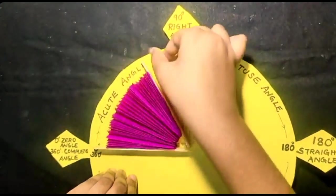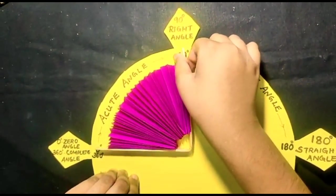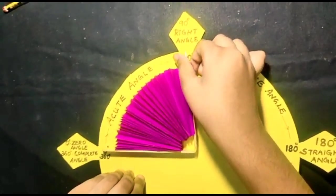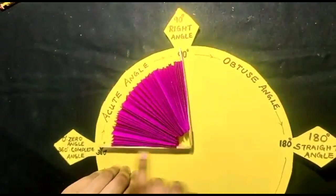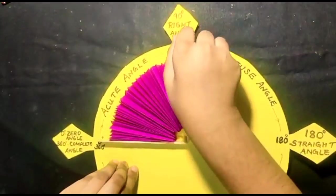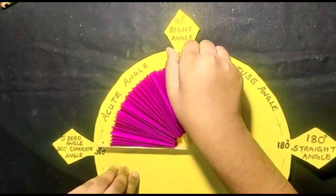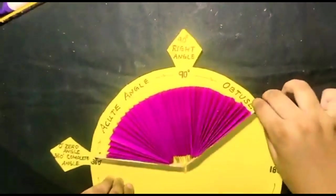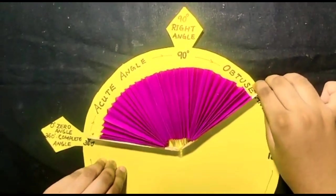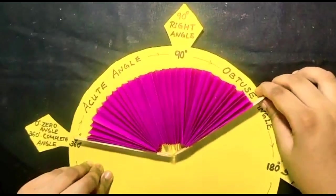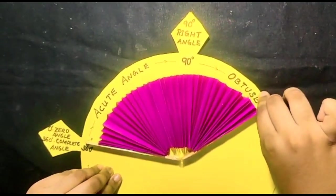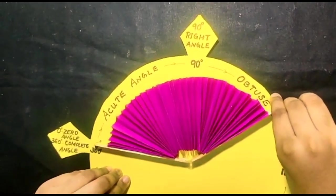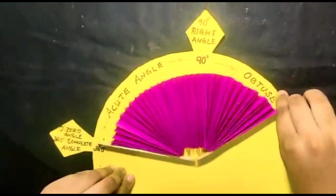When it is at 90 degree, it is right angle. Between 90 degree and 180 degree, it is obtuse angle. Examples are 91, 92, 93, 100, 110 and etc.